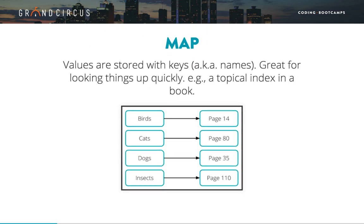Map. In a map, each value is associated with a unique name or key. The values can be looked up and modified by that key. An example of this is the index in the back of a book — the key is the topic you want to look up, for example birds, and the value associated with that key is the page number, in this case page 14. The advantage of a map is that it is very efficient to look up values by their key, but it can be inefficient to access values in any other way. You might recognize the map data type by another name: it is also referred to as a dictionary, table, or associative array. JavaScript objects are this kind of structure, although JavaScript also has a specific built-in map type.